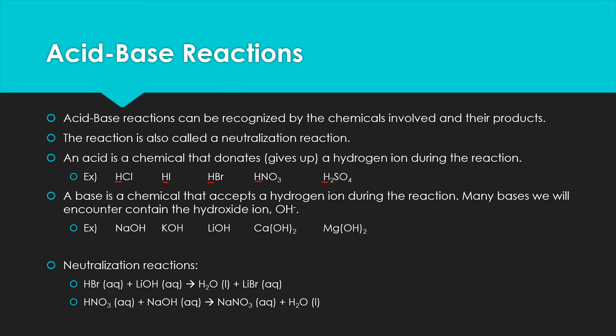The other part of an acid-base reaction is the base. A base is a chemical that accepts a hydrogen ion during the reaction. Many of the bases we encounter also contain the hydroxide ion — that OH⁻ ion. Our strong bases include sodium hydroxide (NaOH), potassium hydroxide, lithium hydroxide, calcium hydroxide, and magnesium hydroxide. They all have either a group 1 or group 2 metal and then the hydroxide ion to balance the charge.